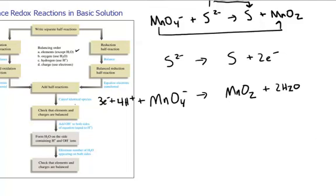The next thing is to equalize the electron transfer. So I've got two electrons here and three here, so that's going to have to be three times this half reaction and two times that half reaction. Now I'm going to rewrite these two half reactions. Three sulfide goes to three sulfur plus six electrons.